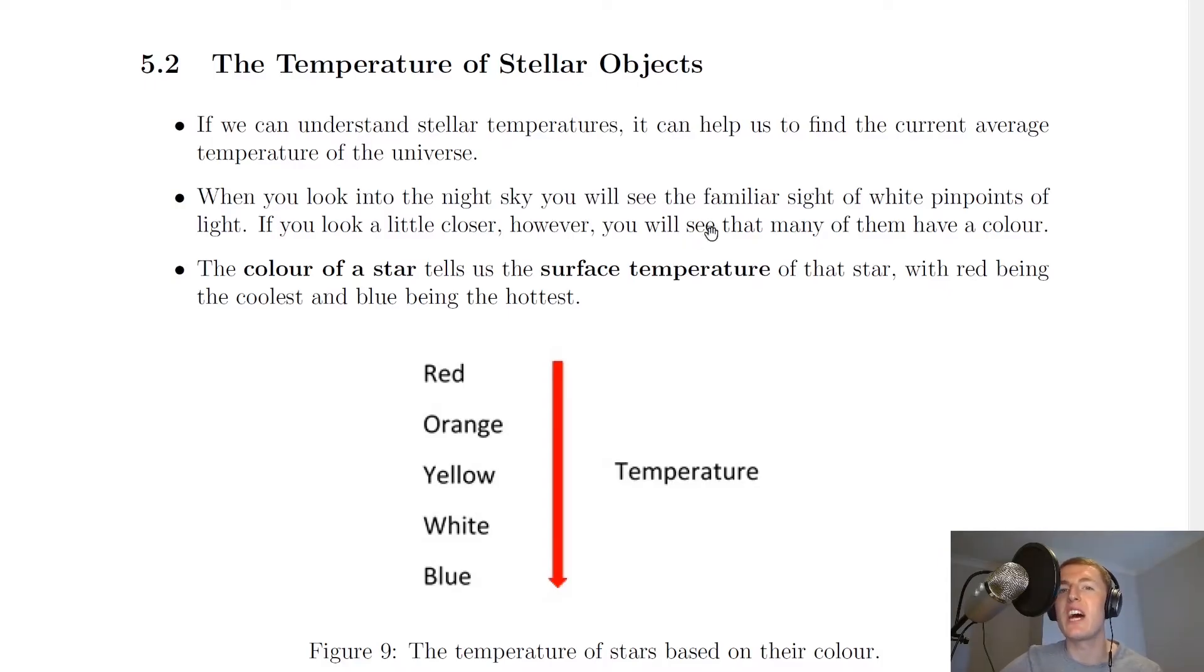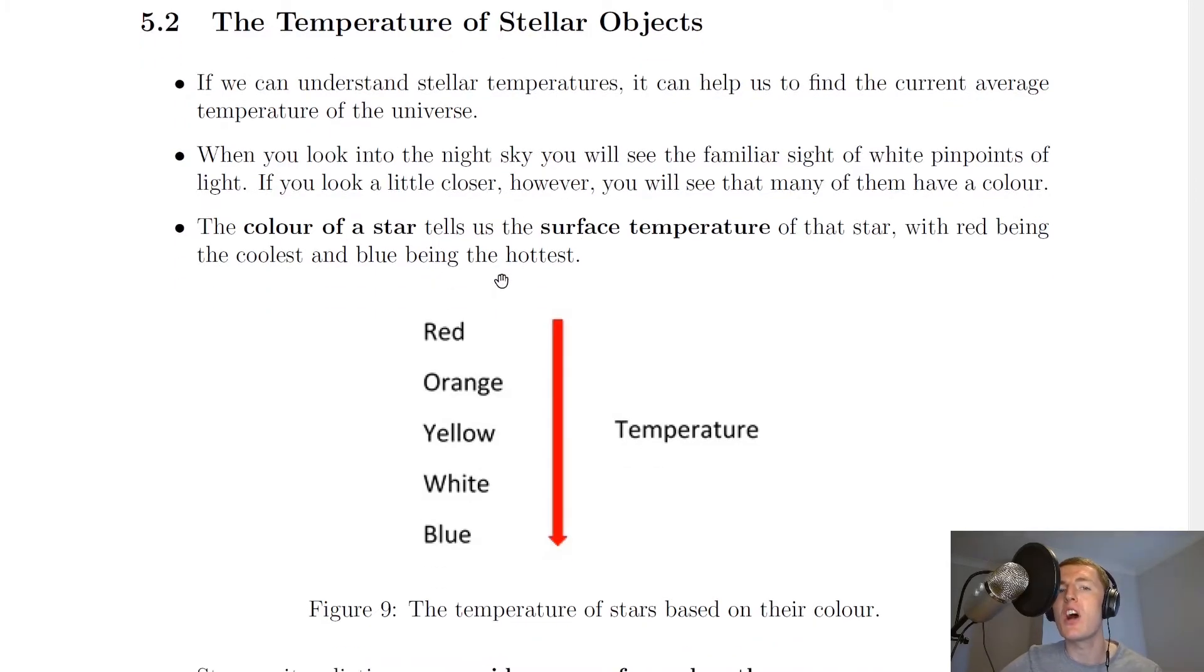When you look into the night sky, you will see the familiar sight of white pinpoints of light. If you look a little closer, however, you will see that many of them have a colour. The colour of a star tells us the surface temperature of that star, with red being the coolest and blue being the hottest.